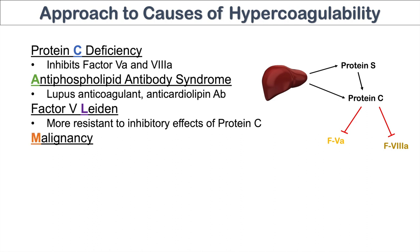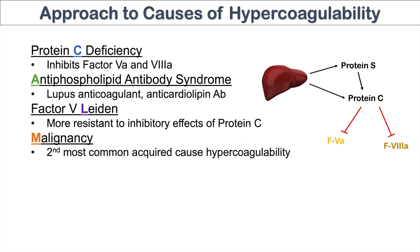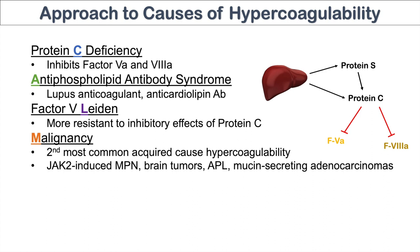Malignancy is another big one — probably the second most common acquired cause of hypercoagulability. The malignancies to think about are JAK2-induced myeloproliferative neoplasms (MPNs), brain tumors, acute promyelocytic leukemia (APL), and mucin-secreting adenocarcinomas. These are all cancers that increase hypercoagulation.